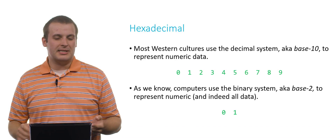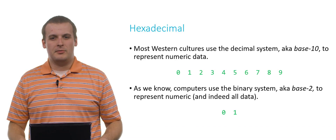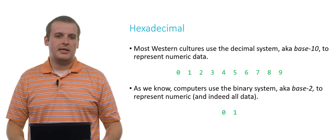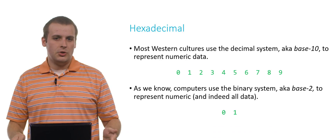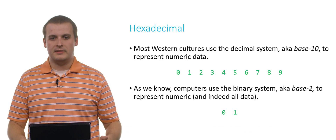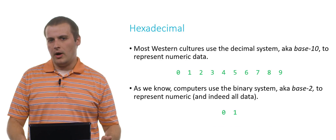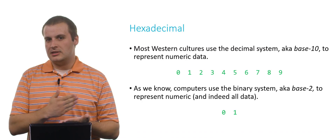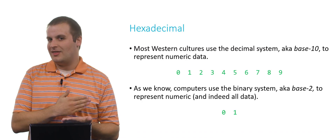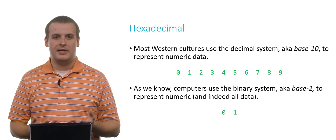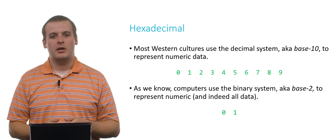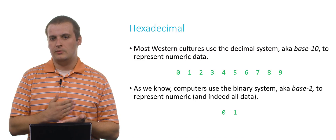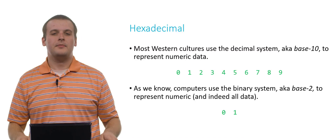Computers do something pretty similar, as you're probably familiar, with the binary system — base 2. The difference there being that there are only two digits to work with, 0 and 1, and so our place values, instead of being 1, 10, 100, 1000 as they would be in the decimal system, are 1, 2, 4, 8, and so on.